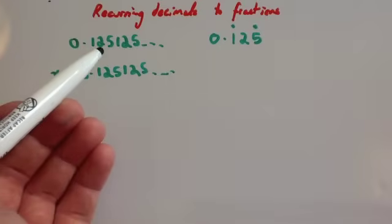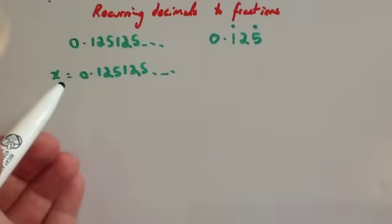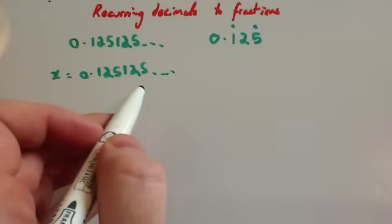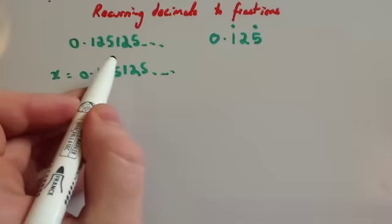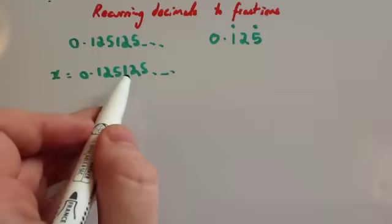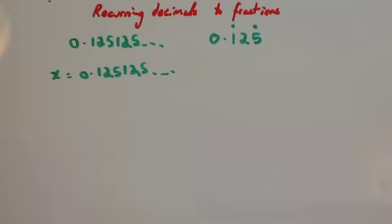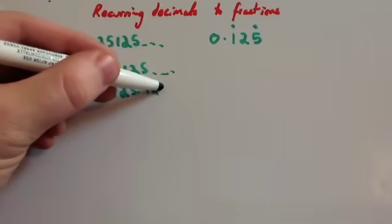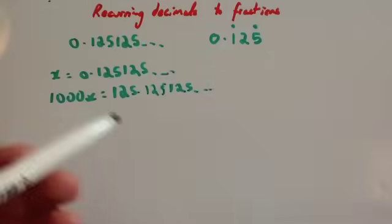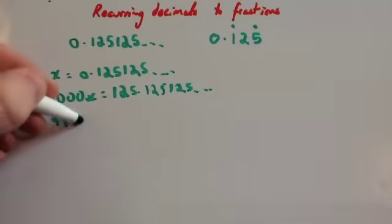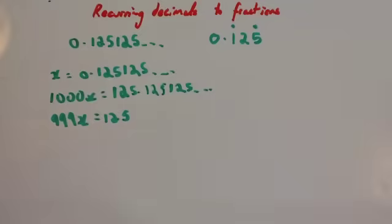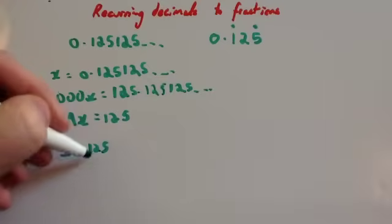Now let's convert 0.125125125... as a fraction. Let x = 0.125125125... We want another number with 125125125 after the decimal point. If we times by 1000, we move the decimal point three places to get 1000x = 125.125125... The most important thing is that the bit after the decimal point must be exactly the same in both equations so when you subtract them they cancel out. Taking x from 1000x gives 999x. The 125 take away 0 leaves 125, and the bits after the decimal point cancel out. So 999x = 125, and x = 125/999.